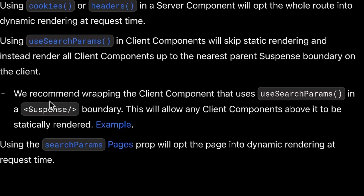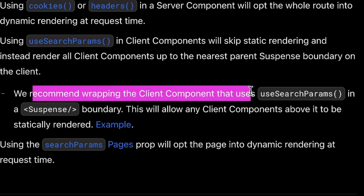Next.js recommends wrapping client components that use the useSearchParams hook in a Suspense boundary, which will effectively create its own separate chunk for that component. This will allow any client components above it in the hierarchy to be statically rendered. So if you're going to use useSearchParams, it's good to make it a leaf component at the end of your React tree hierarchy, so all parent components above it can still be statically rendered — improving performance.